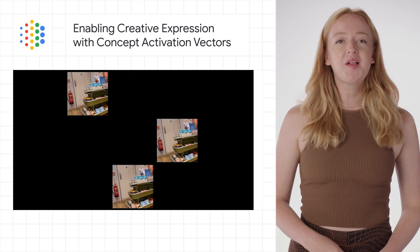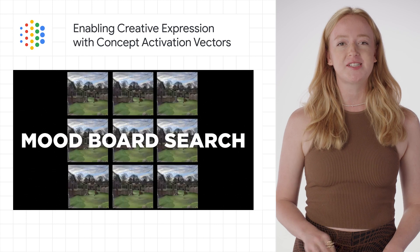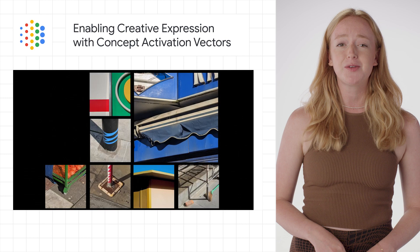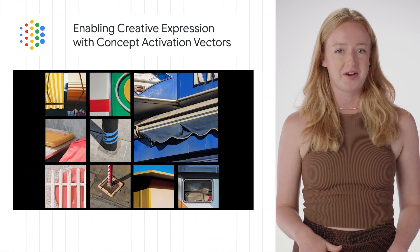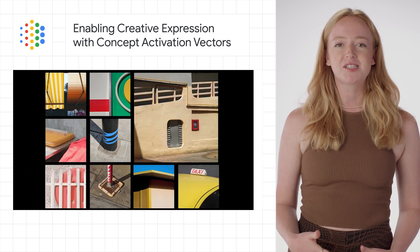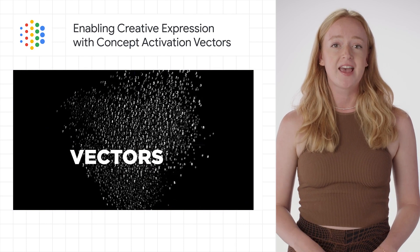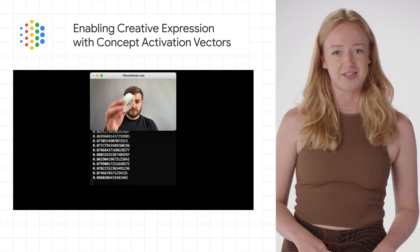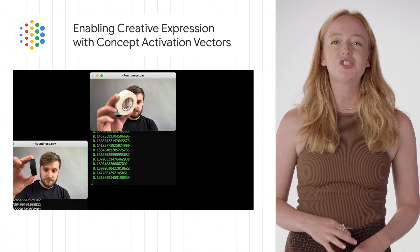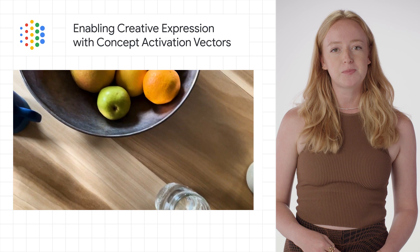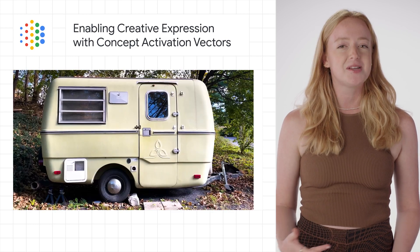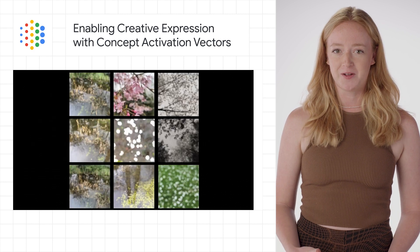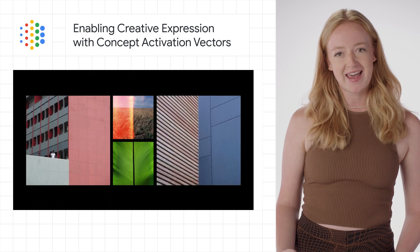Google AI just announced Mood Board Search, a new ML-powered research tool to explore image collections using mood boards as your search query. Learn how Mood Board Search used pre-trained computer vision models and a machine learning approach called Concept Activation Vectors to demonstrate how machine learning can enable people to visually explore subjective concepts in image datasets. Watch the announcement on the Experiments with Google YouTube channel and read more on the Google AI blog.